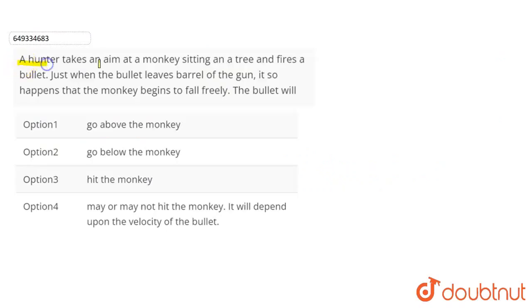In this question we have given a hunter takes an aim at a monkey sitting in a tree and fires a bullet. Just when the bullet leaves barrel of the gun, it so happens that the monkey begins to fall freely. The bullet will go above the monkey, go below the monkey, hit the monkey, or the bullet may or may not hit the monkey. It will depend upon the velocity of the bullet.